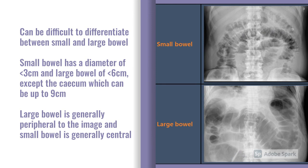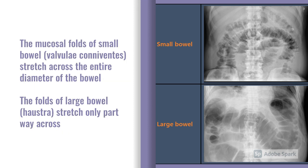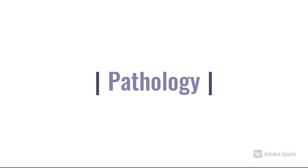It's often difficult to differentiate large and small bowel on abdominal x-rays, but there are a couple of clues. One of the key things is size: small bowel tends to be up to about three centimetres, large bowel up to about six, except for the caecal area which can be up to nine centimetres. So three, six, nine are the numbers to have in mind. We'd expect large bowel to be generally peripheral and small bowel more central, though patients may have abnormal anatomy. We also use the mucosal folds — the mucosal fold of small bowel stretches across the entire diameter, whereas the haustra of the large bowel only go part way across.